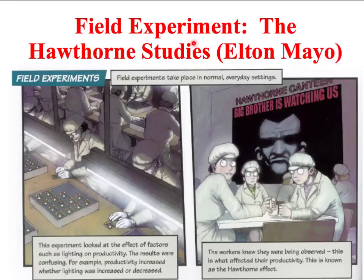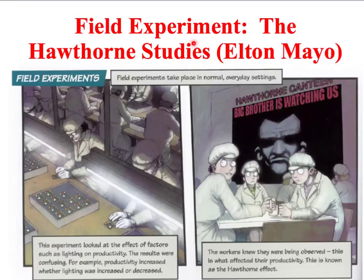Mayo conducted an experiment to show how changes in factors such as lighting, heating, and length of breaks — the independent variable — affected work levels, the dependent variable. It was found that workers' productivity increased regardless of how the researchers altered the working environment. For example, adjusting lighting levels caused all three groups of employees to work harder, even the group where no change had been made. Mayo eventually realised that employees were working harder not because of environmental changes, but because they were aware they were being watched and that Mayo would report back to their boss. This experiment is the origin of the term the Hawthorne effect.